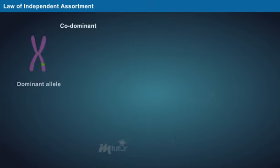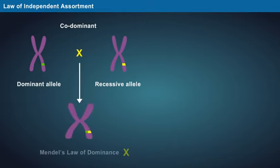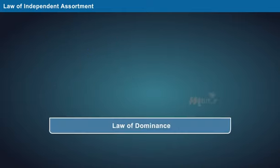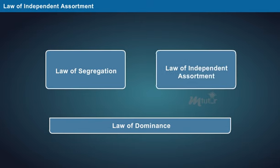If the alleles are codominant, they don't follow Mendel's law of dominance. These three laws marked the beginning of modern genetics.